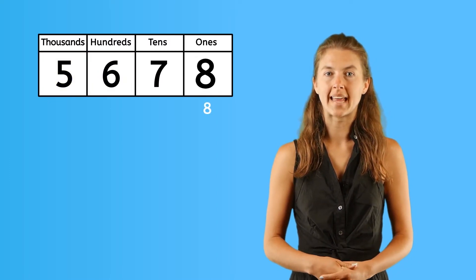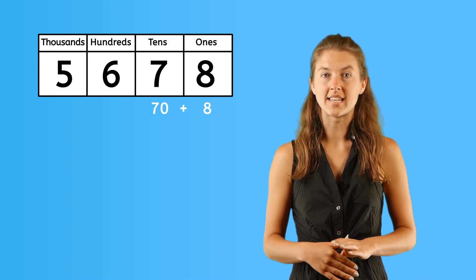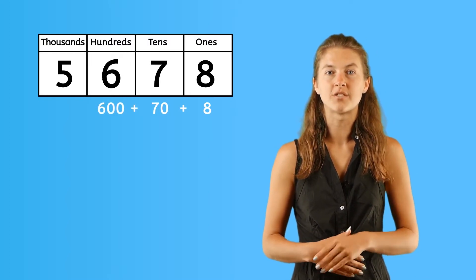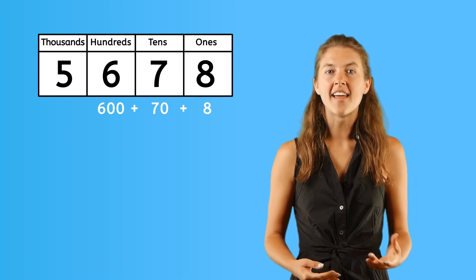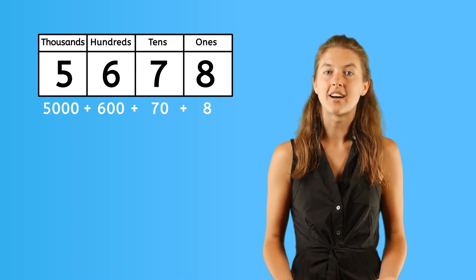In this number, 8 is in the ones place, 7 in the tens, or 70, and 6 in the hundreds, which represents 600, and 5 in the thousands place, or 5,000.